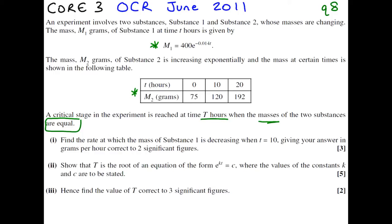This is a case of using the formula we're given for substance 1 and finding the rate of change. When we're talking about rate of change, we're talking about differentiating. The rate of change of substance 1 with respect to time, we're going to get by differentiating 400e to the minus 0.014t.